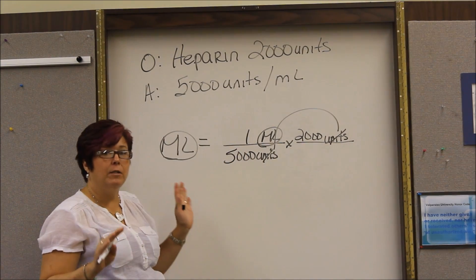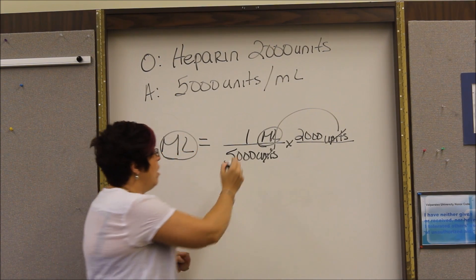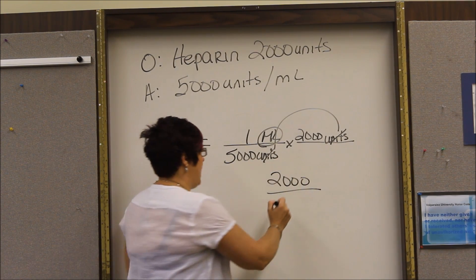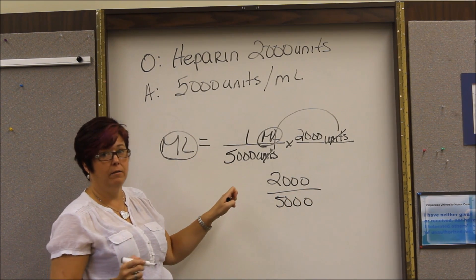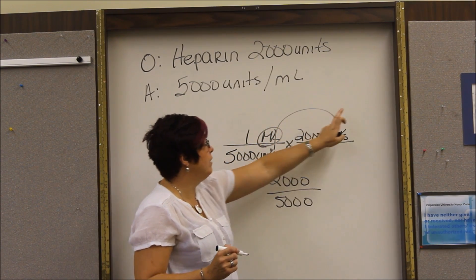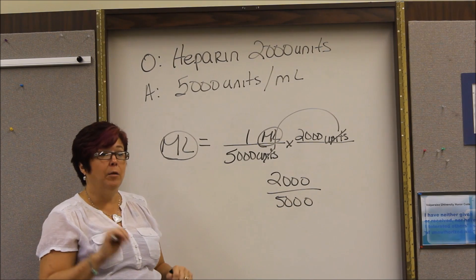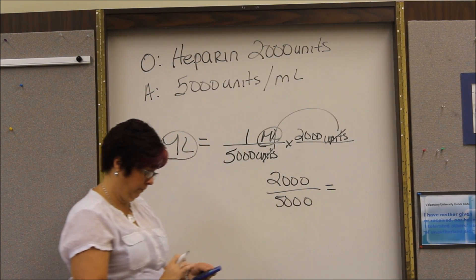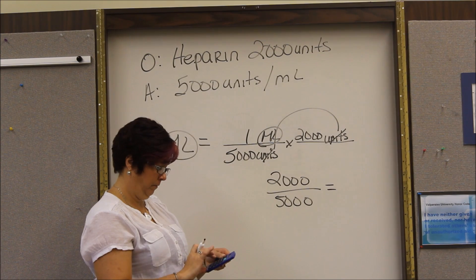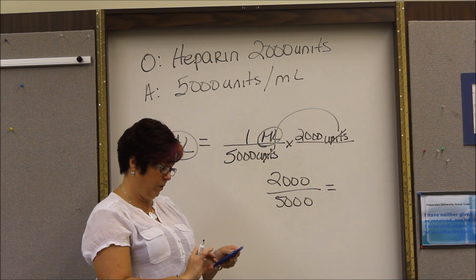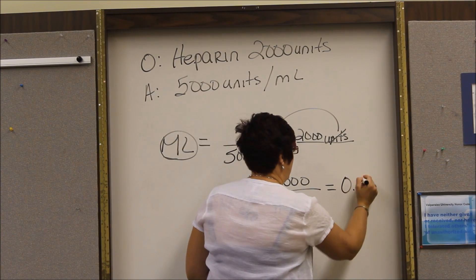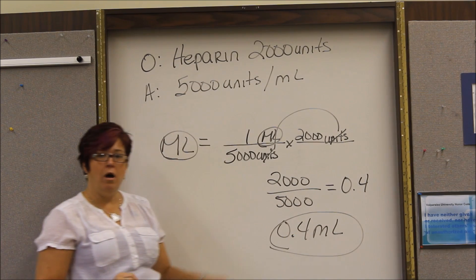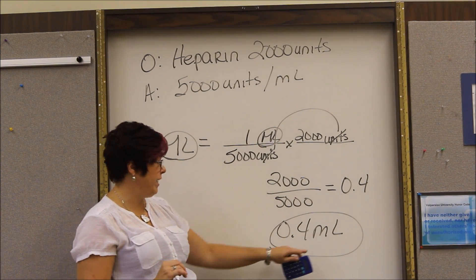When you do your math, especially as the formulas get longer, always do the math across the top. So we have 2,000. Do the math across the bottom and then divide. If you divide each individual section and then do the multiplication, sometimes your answer can be off enough so that it is wrong. 2,000 divided by 5,000 equals 0.4. So we are going to draw up 0.4 milliliters in our syringe. That is your answer.